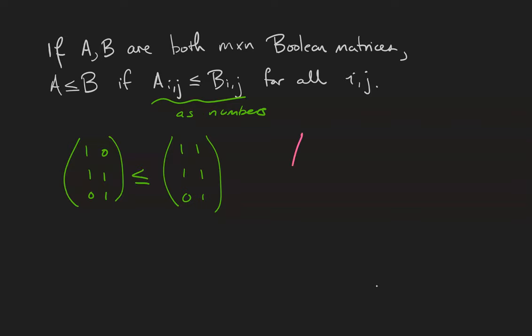On the other hand, if we have the matrix 1 0 1 1 0 1, it is not less than or equal to the matrix 0 1 1 1 1 1, because the first row first column entry is not less than the one on the right side.